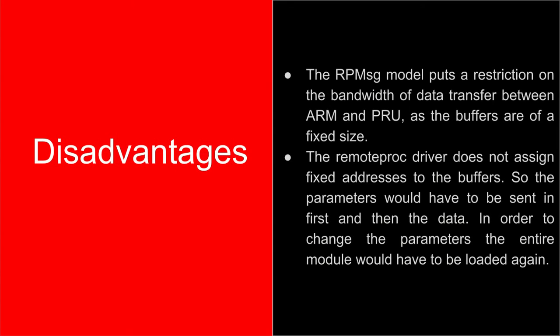There are certain disadvantages as well. The RPMSG model puts a restriction on bandwidth as the buffers in the Vring data structures are of a fixed size. If the requirement is to implement a 16-bit or 32-bit word size in SPI, additional logic would be needed since buffers are 8-bit in RPMSG, requiring two consecutive buffers to be read for a 16-bit word. Additionally, the remote-proc driver does not assign fixed addresses to the buffer, so the PRU must be instructed that the first set of bytes in the buffer it receives are parameters dictating communication with the slave, and whatever follows is data. If you want to change the parameters, the entire module would have to be loaded again.